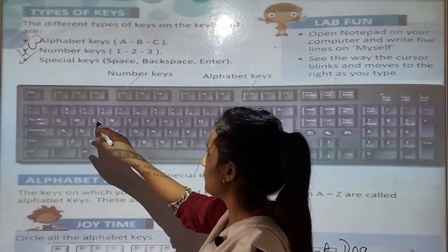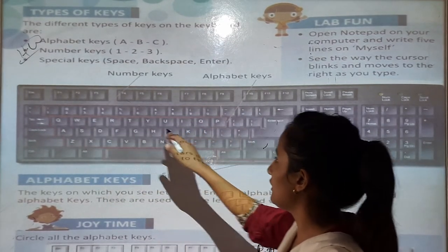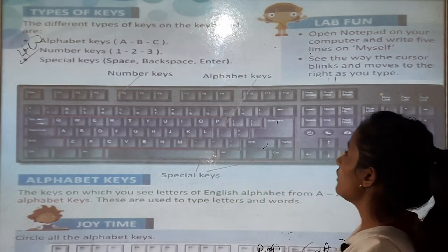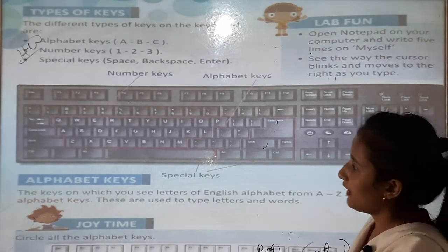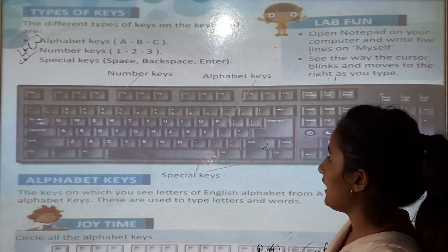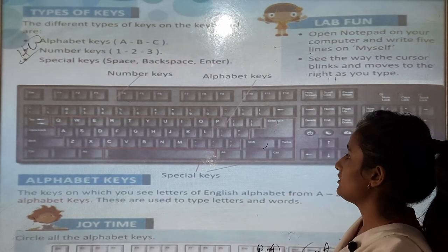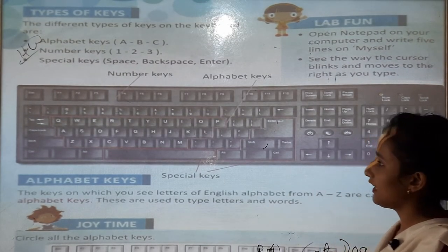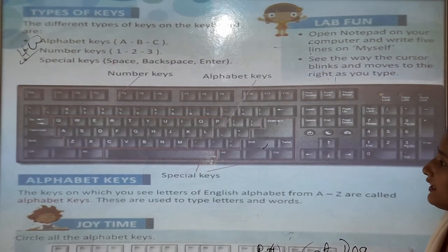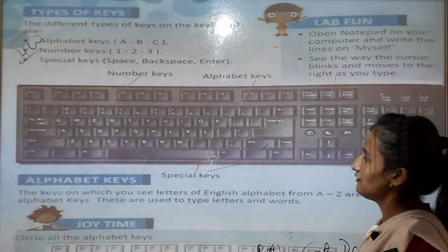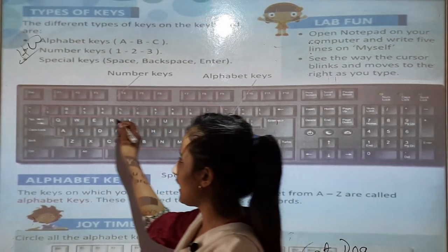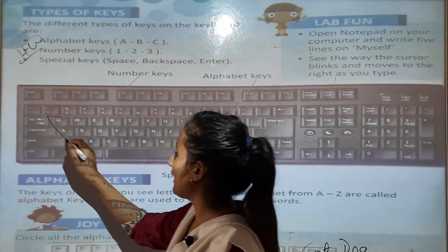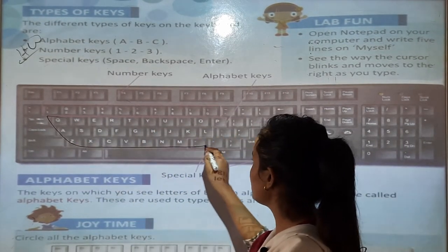The 26 alphabet keys on the keyboard are: Q, W, E, R, T, Y, U, I, O, P, A, S, D, F, G, H, J, K, L, Z, X, C, V, B, N, M. These are all the alphabetical keys.